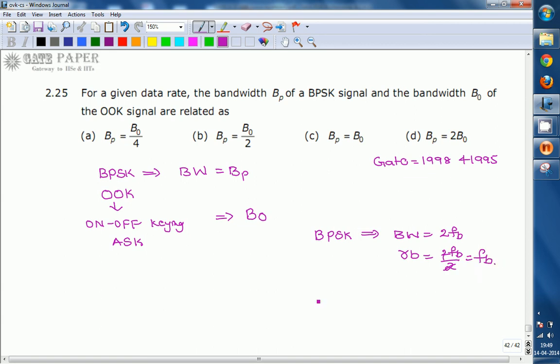Similarly, the bandwidth for the OOK signal is also 2fb. The data rate is the same as fb. If bandwidths are the same, then the signaling rates are also the same for BPSK and OOK.